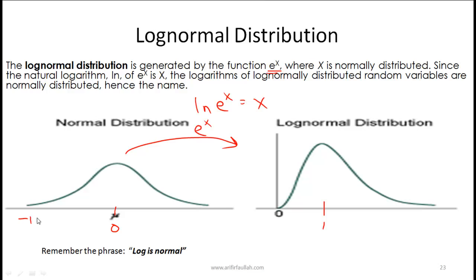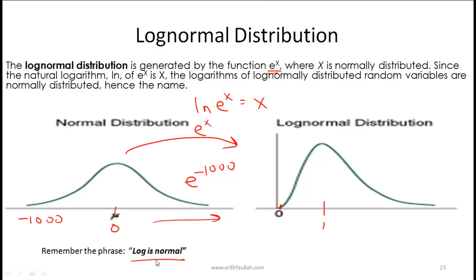If you are far to the left, say at minus 1,000, then e to the power of minus 1,000 gives a very small but still positive number, since e to the power of anything is always positive. Moving far to the right, e to the power of 1,000 gives very large numbers. Going right to left, we simply take the log of this distribution, which yields a normal distribution — hence the term log normal.